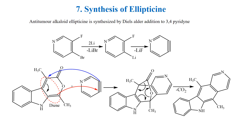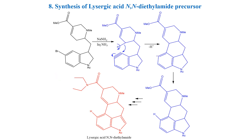Aromatization takes place by the elimination of carbon dioxide. Benzyne is also used to prepare the precursor for lysergic acid diethylamide, which is a hallucinogenic drug. It involves an intermolecular nucleophilic addition reaction as the key step, as shown in the reaction. These are all some of the synthetic applications of benzyne.